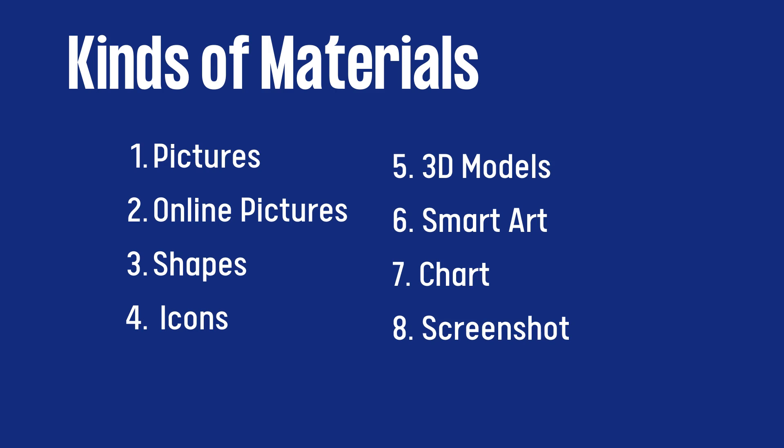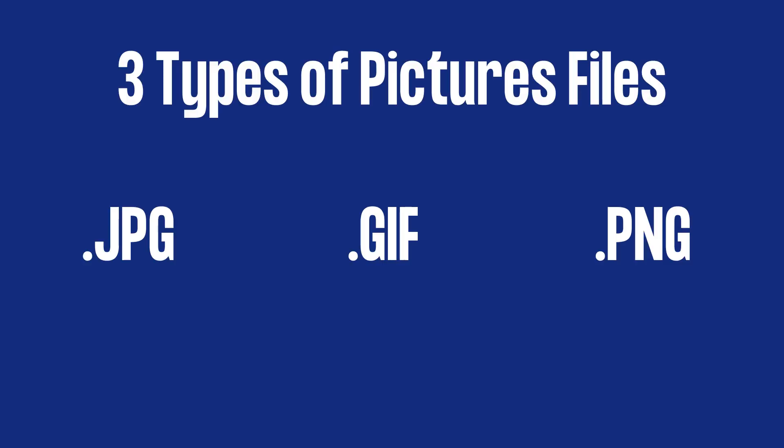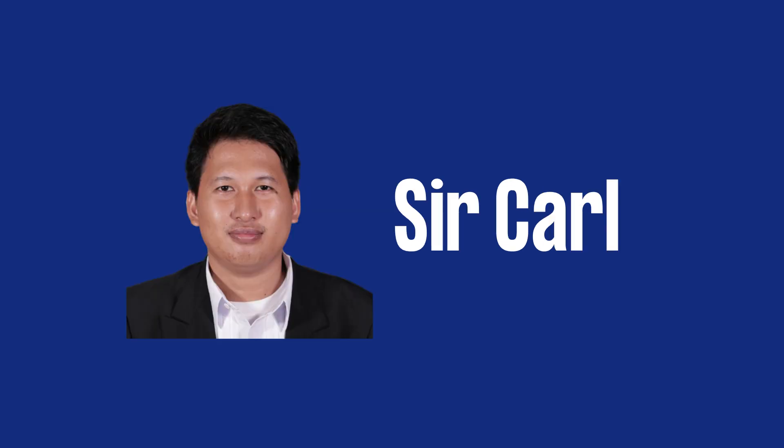Let us do a recap of what we have learned in this video tutorial. The 8 different kinds of materials you can integrate on Microsoft Word are: pictures, online pictures, shapes, icons, 3D models, SmartArt, chart, and screenshot. The 3 types of picture files are JPEG, GIF, and PNG. I am happy that you learned something from our lesson. It is now your time to demonstrate what you have learned. Take a look at your WHLP and see the task for integrating materials on Microsoft Word. This is Sir Carl reminding you that technology is a power that can make lives better. See you in the next lesson.